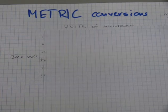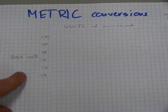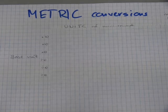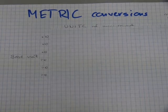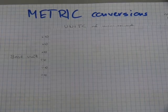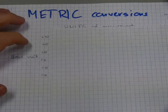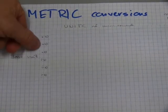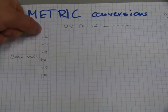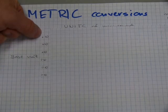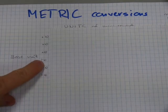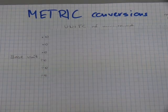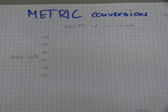For units of measurement, we always have a base unit. In the metric system we have multiples of this base unit, and that multiplier or factor is always ten times. So we have ten times the base unit, a hundred times, a thousand times, one tenth, one hundredth, or one thousandth of a base unit.